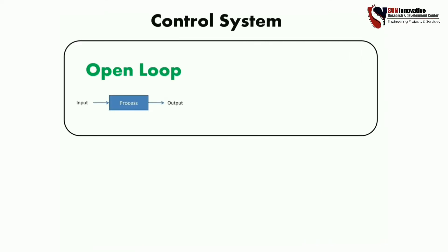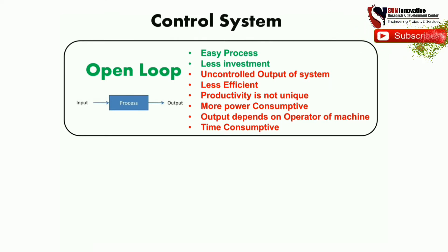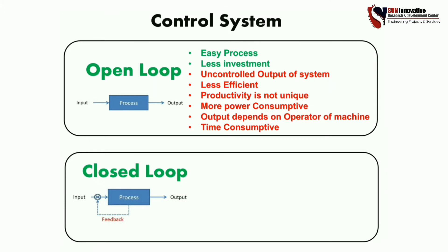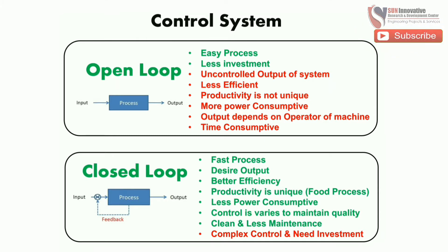This is a comparative study between open loop and closed loop. In the video, the green line shows advantages and the red line shows disadvantages. Open loop has more disadvantages, so it is not ideal. In closed loop, the green lines are more, because it offers unique and clean productivity with less maintenance, making it the better choice.